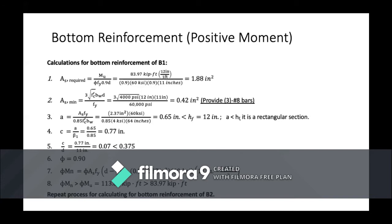Since 0.65 inches is less than the slab thickness of 12 inches, the concrete section is a rectangular section. We then find C, the distance from the outer compressive fiber to the neutral axis, equal to A divided by beta-1, giving C = 0.77 inches. C/d = 0.07, so the phi factor is 0.90. The nominal moment strength phi*Mn is calculated as phi times steel area times yield strength times (depth minus A/2), coming out to 113.85 kip-feet. Since 113.85 kip-feet is greater than the applied moment of 83.97 kip-feet, the design is adequate. This process is repeated for the bottom reinforcement of B2.